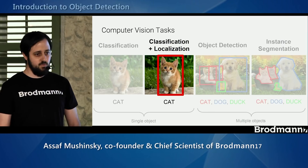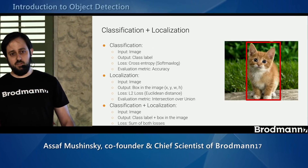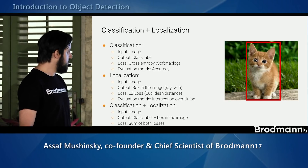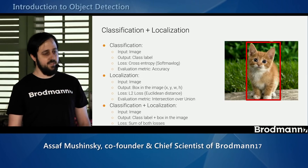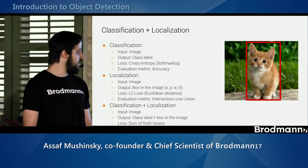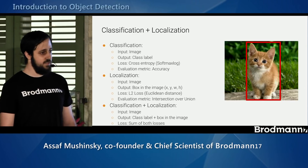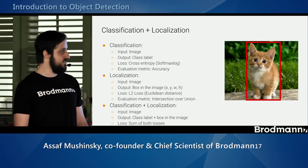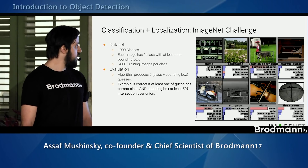Assuming you have some knowledge in machine learning and deep learning, for classification and localization we train them together. The classification takes the image as input and outputs the correct class, and the localization predicts the bounding box coordinates and size. Each can be trained alone using their own loss: classification uses cross-entropy and localization uses L2 loss. When training together, you simply sum the losses. This is an example from the ImageNet localization challenge, where you have a dataset with many classes.